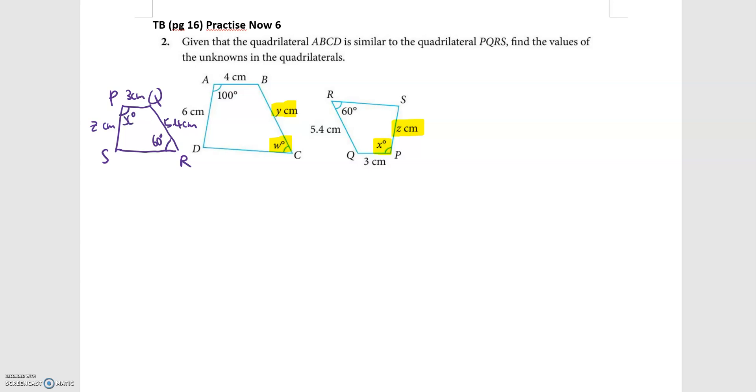So now I will start with the easier ones, which is to get the unknowns of the angles. Because even though the two quadrilaterals are similar, the angles that are corresponding are actually equal. So I can very quickly get x is 100 and I know w is 60 when I compare the two quadrilaterals directly.